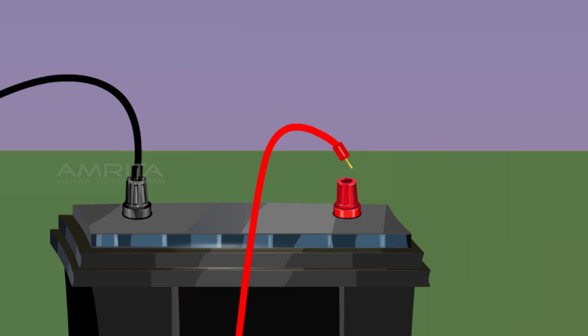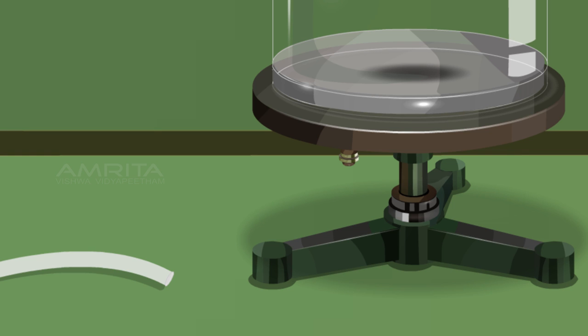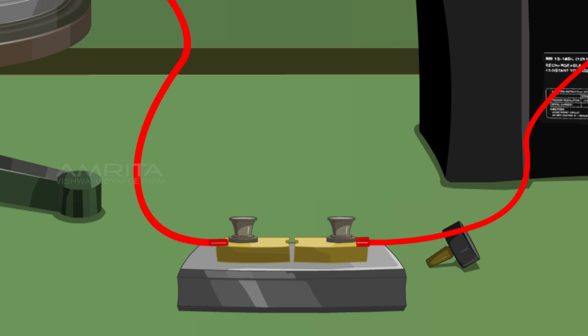Connect the electric bell with the battery through a key. Then connect the vacuum pump to the bell jar. Insert the key.